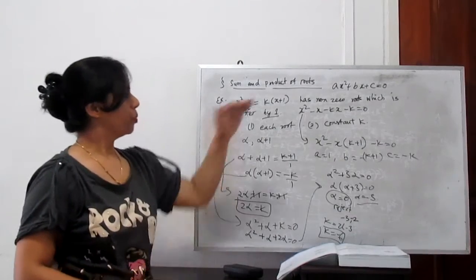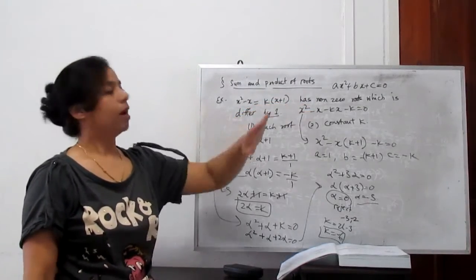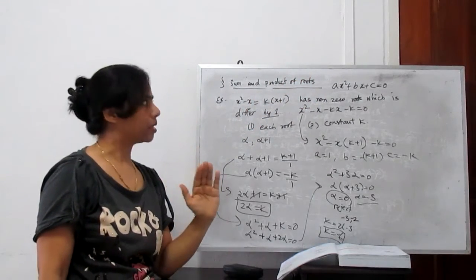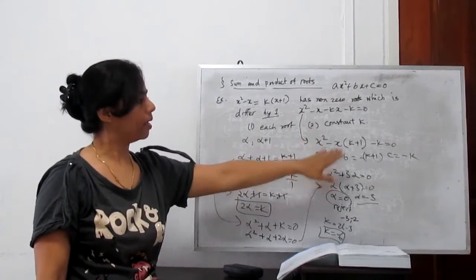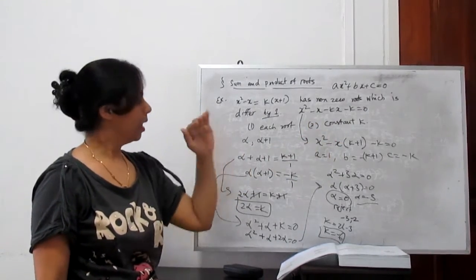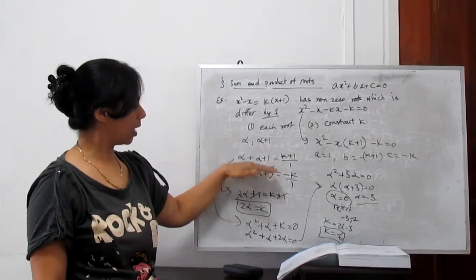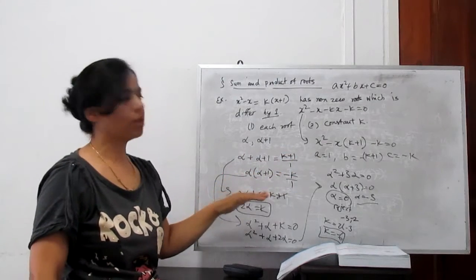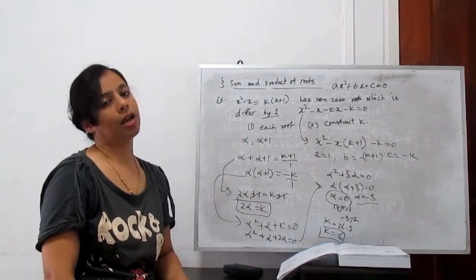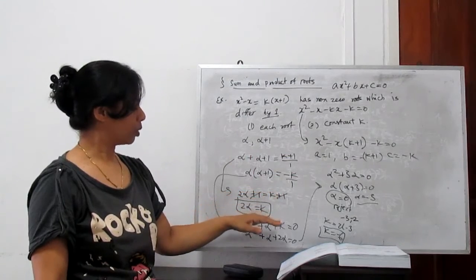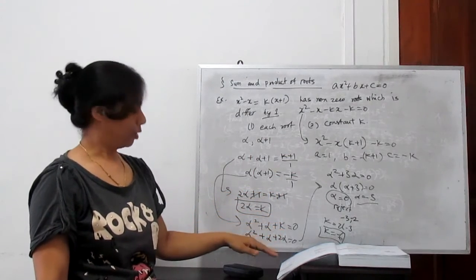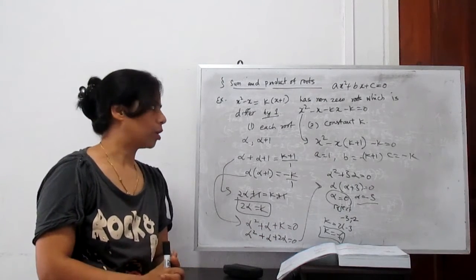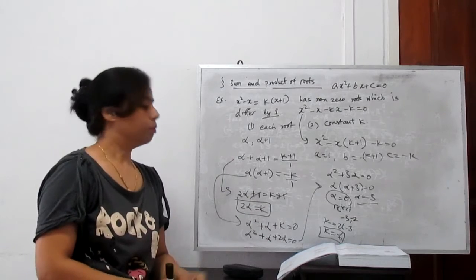You need to proceed step by step. Step 1: convert the given equation to ax² + bx + c = 0 form. Find the values of a, b, and c by comparing. Then substitute in alpha + beta = -b/a and alpha·beta = c/a. You will get one linear and one quadratic equation. From the linear equation substitute one variable, solve to find the roots, and then find the constant.